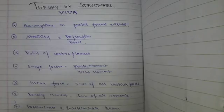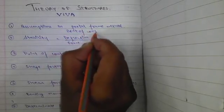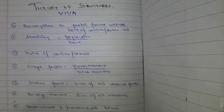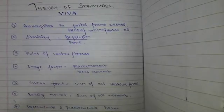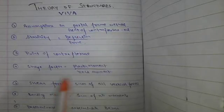First is assumptions in the portal frame method. What are the assumptions in the portal frame method? In the portal frame method there are only two assumptions. One is the point of contraflexor, which lies at the midpoint of each column where the moment is zero and there is no deflection. Another assumption is that the intermediate columns have the shear force 2P, and outer columns have only P shear force. The shear force in the intermediate column is double that of outer columns.